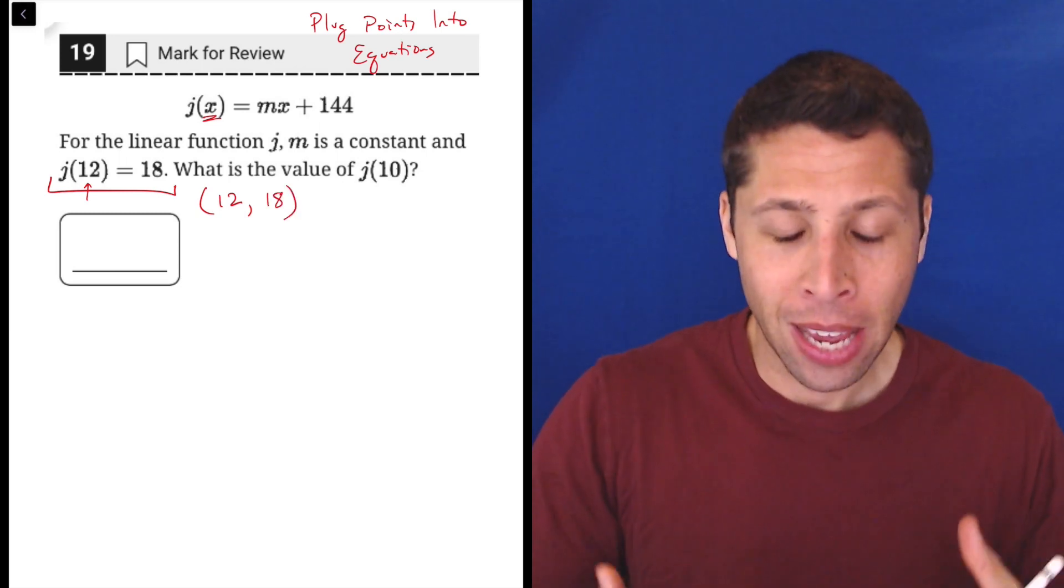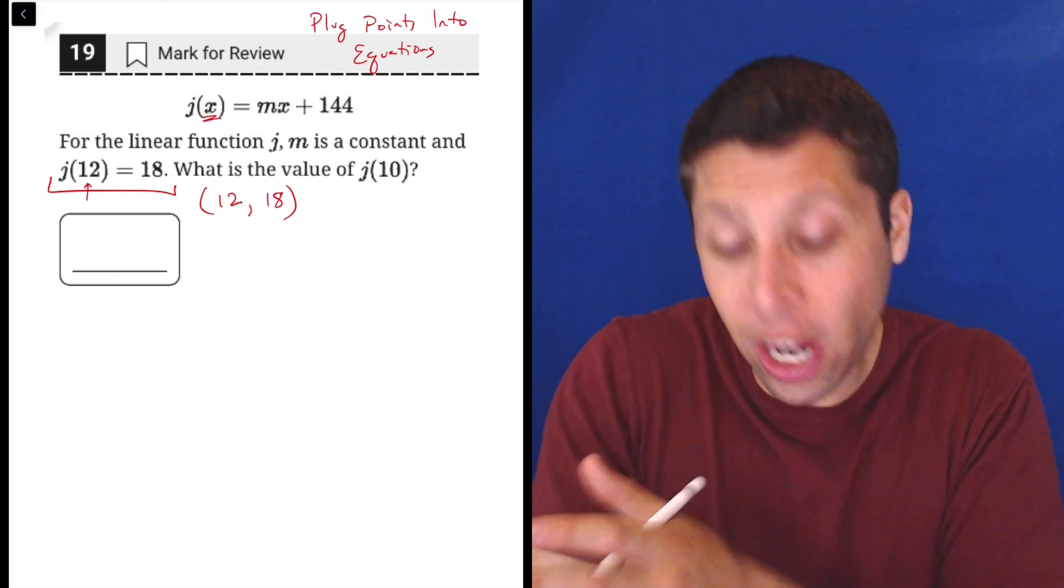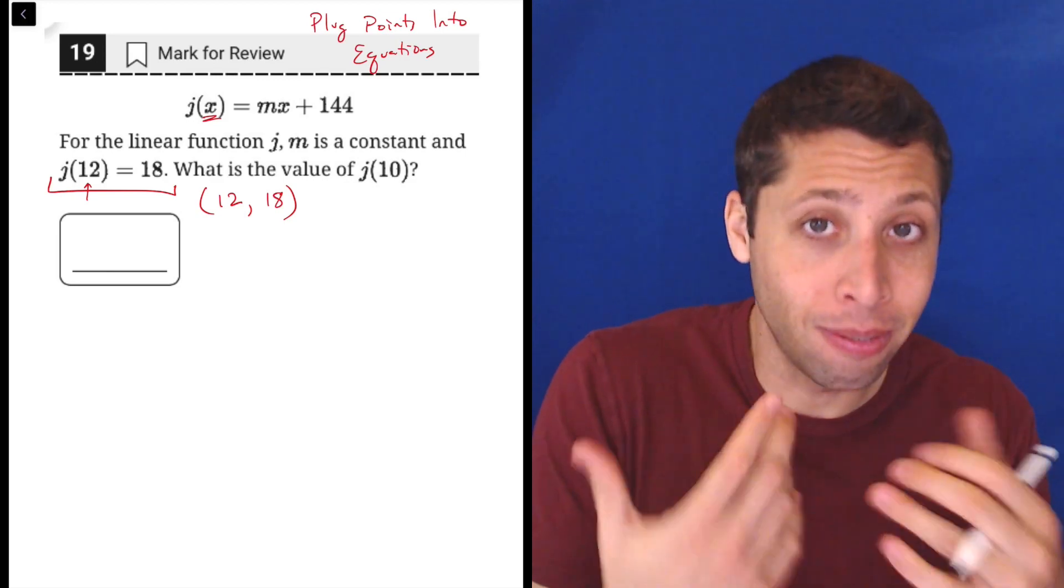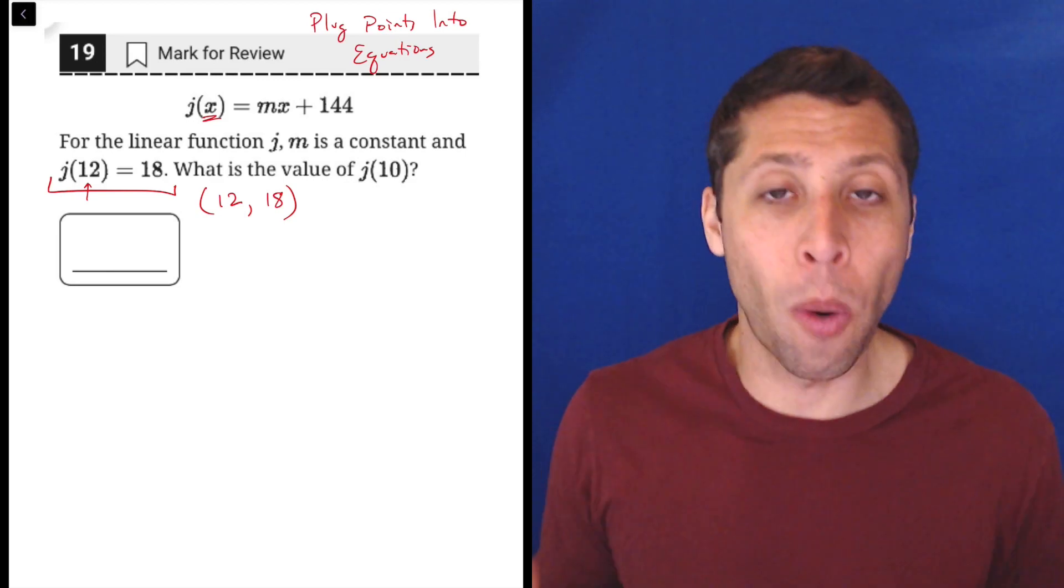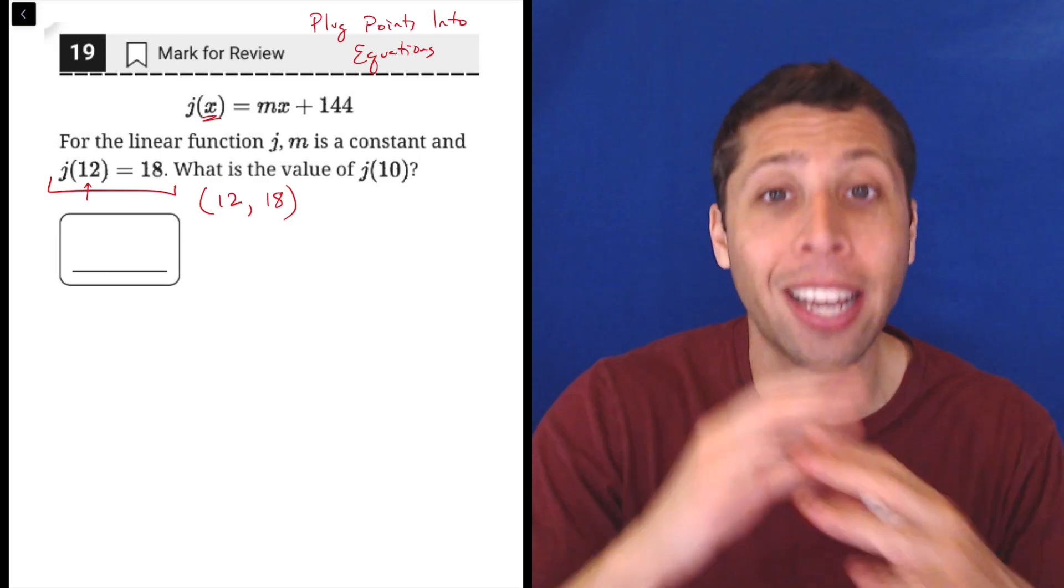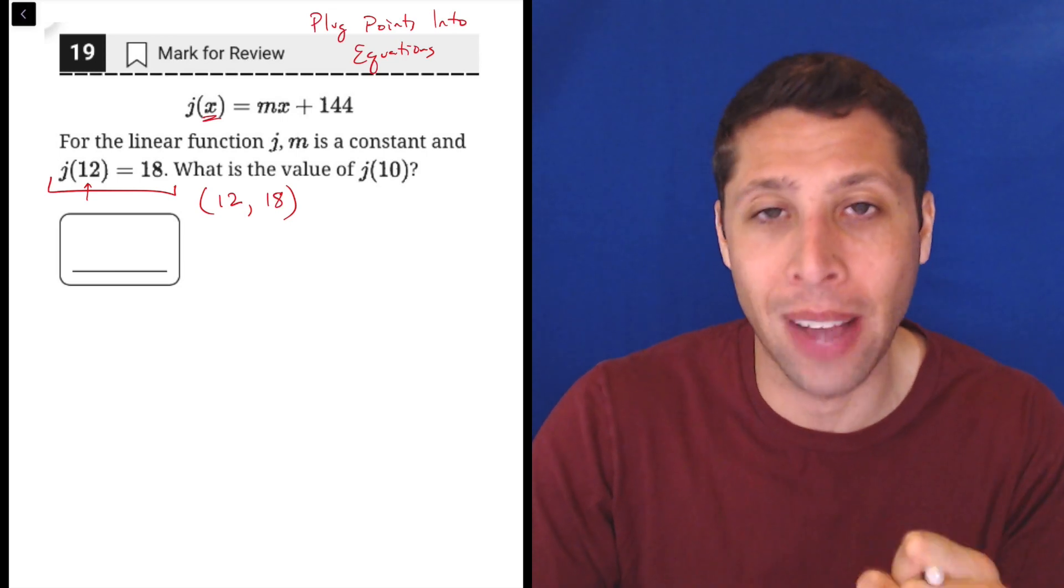So what they're saying here is when we take x as 12 and put that into the j equation, when we solve that, we're going to get that it is equal to 18, and that kind of functions like a y. And I know there's no y here, but you still want to think in terms of x and y because that's how the xy plane is outlined. It's all part of math, right? X's and y's are kind of the fundamental piece of algebra.